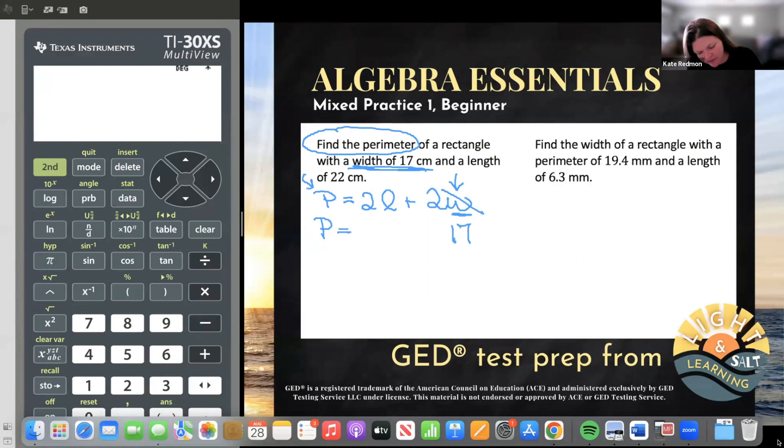So we're going to plug in 17 where we once saw W. Now careful, W wasn't by itself. It was being multiplied by 2. And so I'm going to put that 2 out there with some parentheses to say multiply. And what else do we know? A length of 22 centimeters. Awesome. So length is not a mystery either. It's 22. That's also being multiplied by 2. And I won't forget my plus sign.